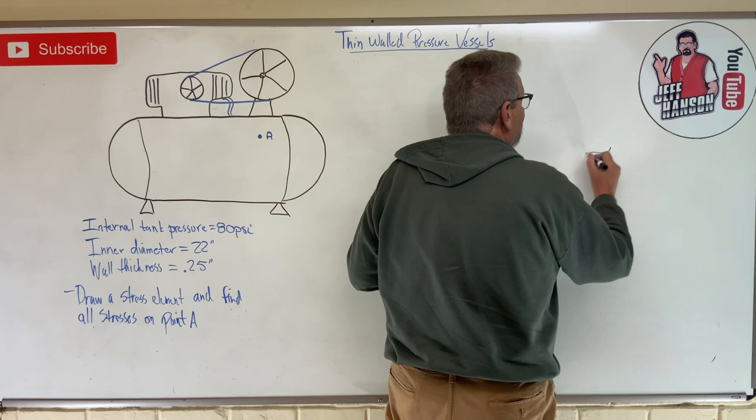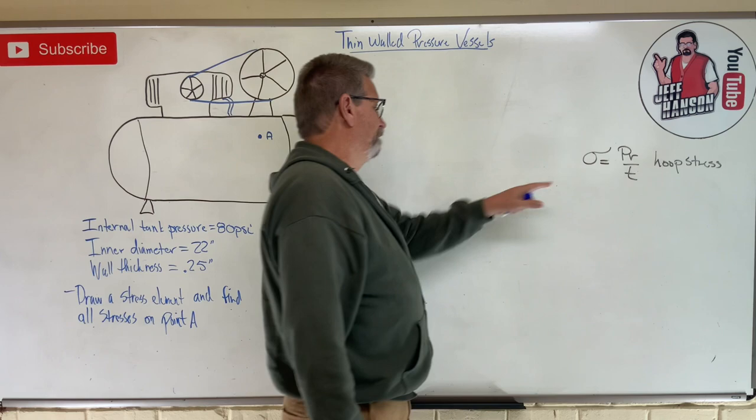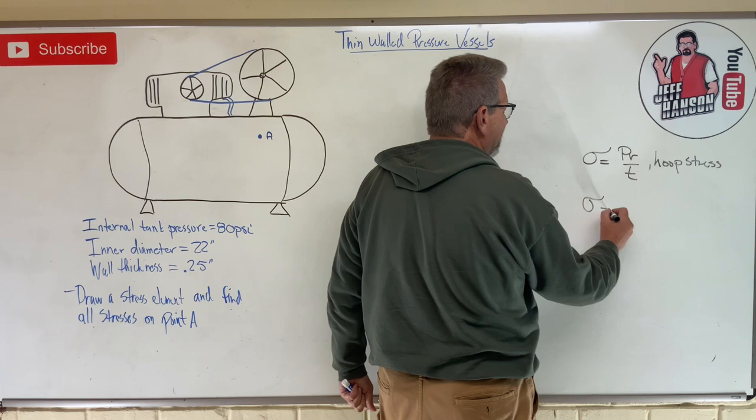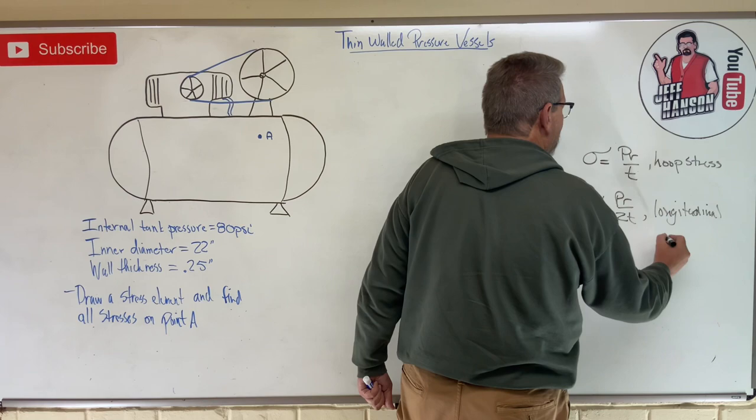If you remember, we introduced two kinds of stress. Sigma equals pr over t, which we called hoop stress. And then we have sigma equals pr over 2t, which we called longitudinal stress.